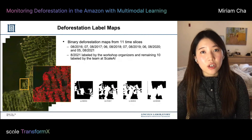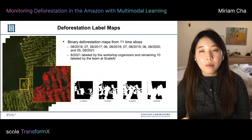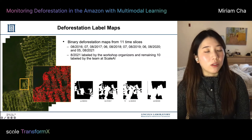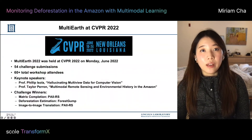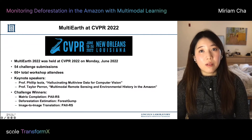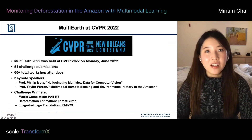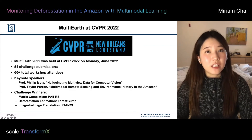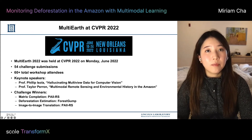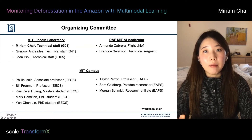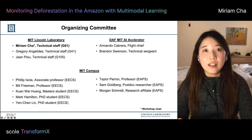With all the efforts, we provided binary deforestation label maps from 2016 to 2021 along with the multimodal remote sensing dataset. Example deforestation label map chips of the same scene from 2016 to 2020 show that more deforestation is occurring over time. With all the preparations — dataset, challenge problems, evaluation server, paper reviews, and scheduling oral presentations — the multi-Earth workshop was held at CVPR last June. We had 54 challenge submissions and 60-plus workshop attendees.